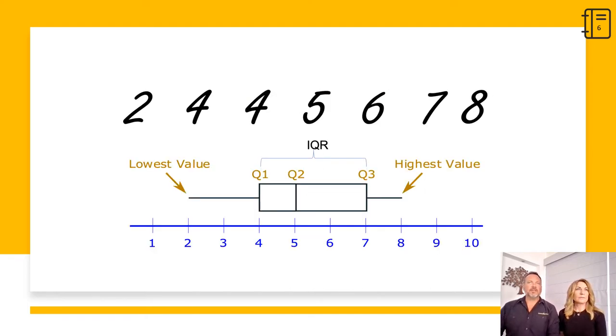Now, using a chart called the box plot or the box and whisker plot, as it's also known, we can show all the important values as shown in this example. For example, we see the five number summary. The lowest value at two, Q1 at four, Q2 or the median at five, Q3 at seven, and the highest value at eight. And the interquartile range is Q3 minus Q1 or three. This is a box plot.